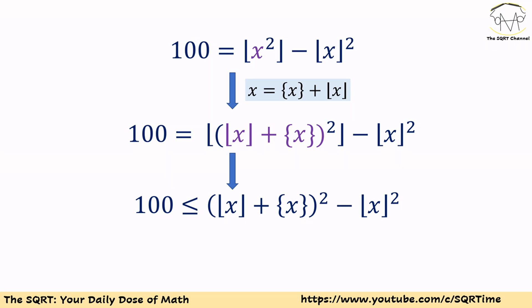To solve this problem we are going to start by writing x as floor of x plus fractional part of x. This is true because floor of x is going to be the integer part of x and fractional part of x is going to be just the fractional part.